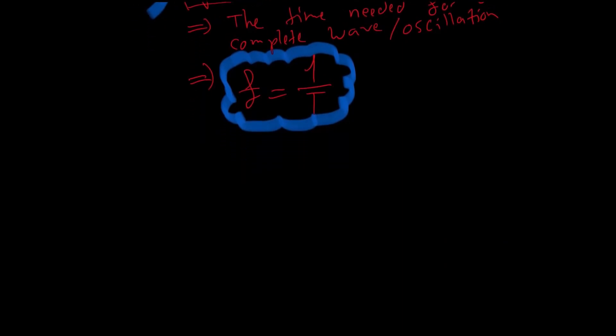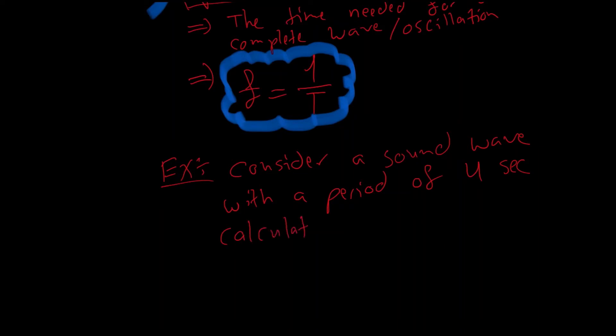If we have the period of a wave, we know the time taken to complete one wave. We have T which is the period, I'm able to use the period in order to help me calculate the frequency of a wave. So, let's have an example. Consider a sound wave with a period of four seconds. Calculate the frequency.